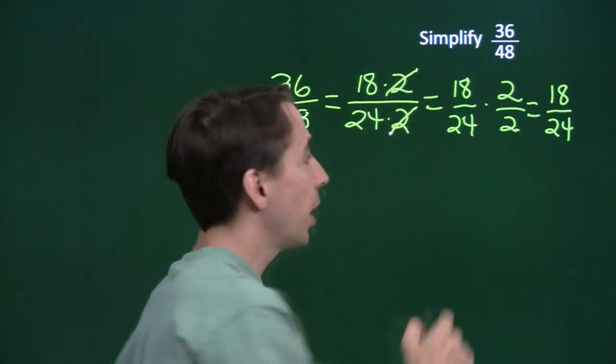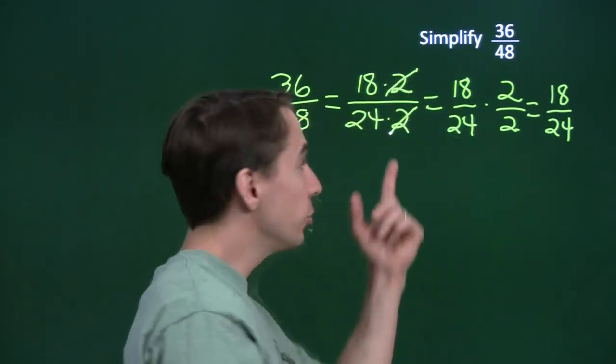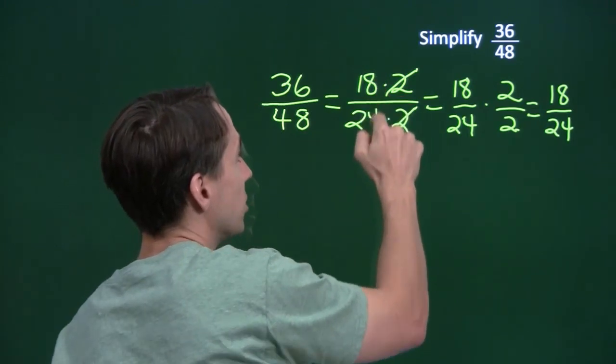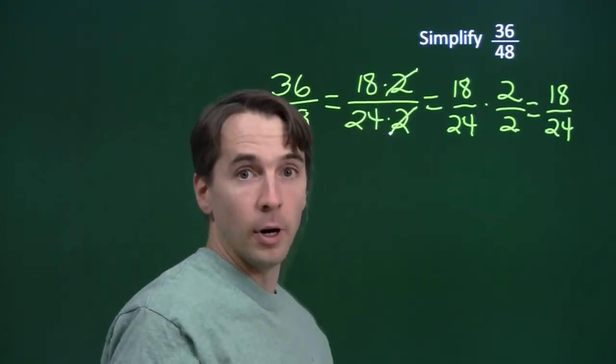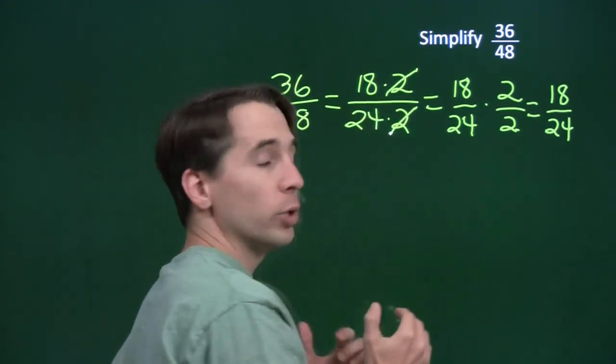Well, my numerator and my denominator are both products, and they have a factor in common, the 2s. We know that they're going to cancel and just leave us with 18 over 24. All right? So we've got that now and we're done.